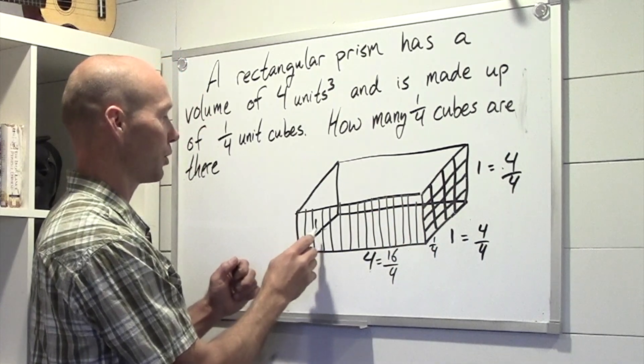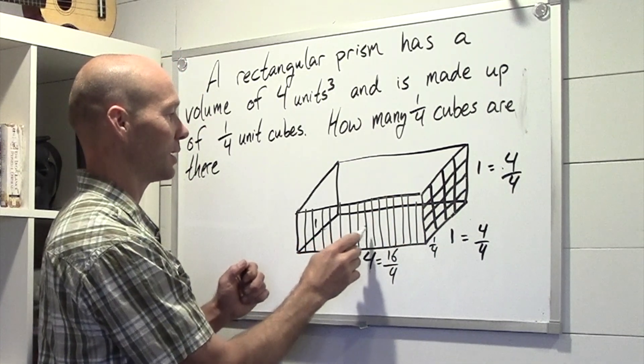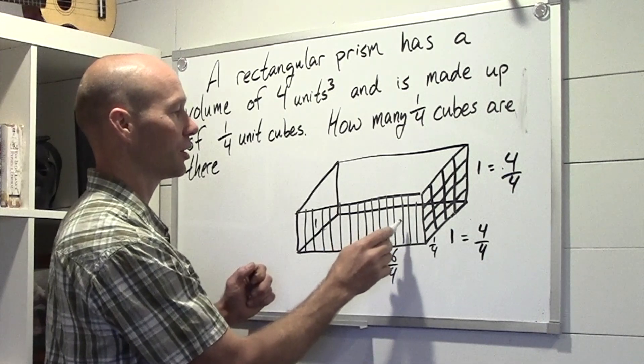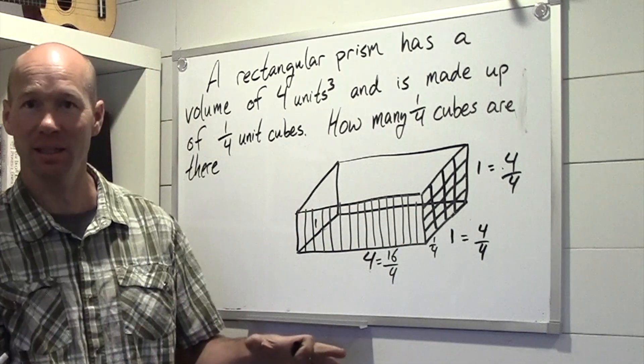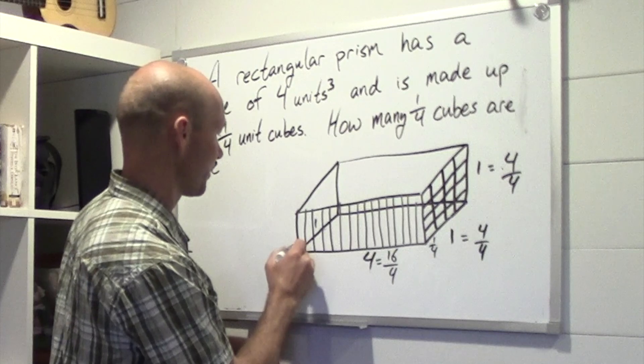which gives us 1, 2, 3, 4, 5, 6, 7, 8, 9, 10, 11, 12, 13, 14, 15, 16/4ths in our units.